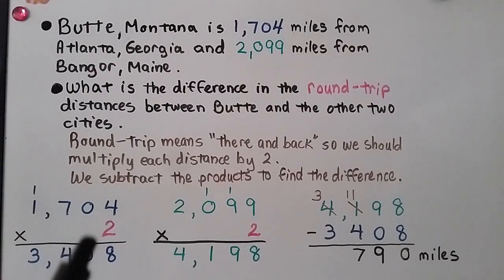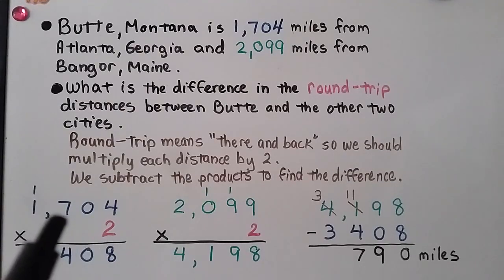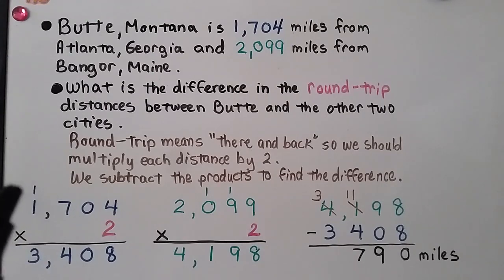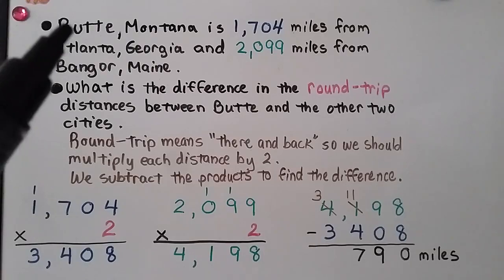For 1,704 times 2: starting in the ones place, 2 times 4 is 8. Then 2 times 0 is 0, so we put a 0 in the tens place. 2 times 7 is 14 — regroup the 1, put the 4 down. And 2 times 1 is 2, plus 1 more is 3. We have 3,408 miles for the Butte to Atlanta round trip.